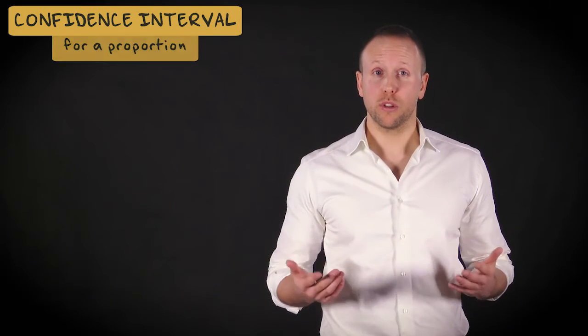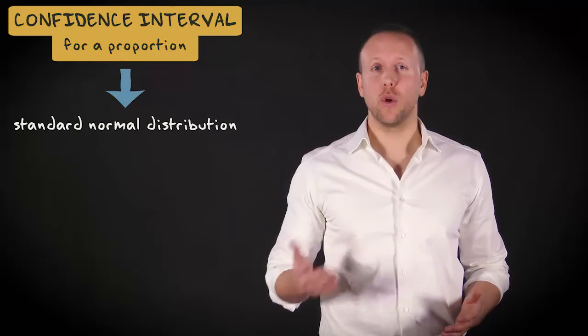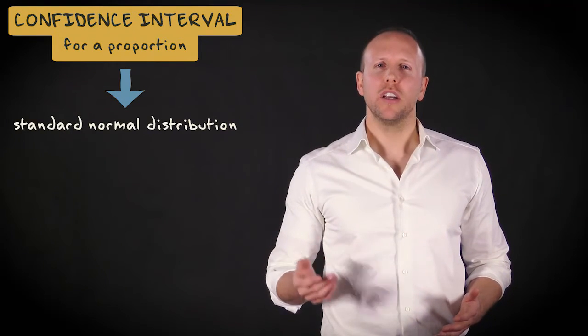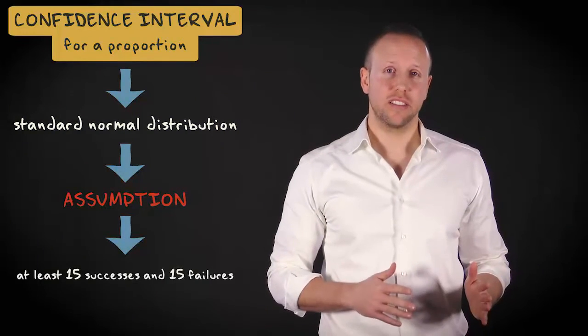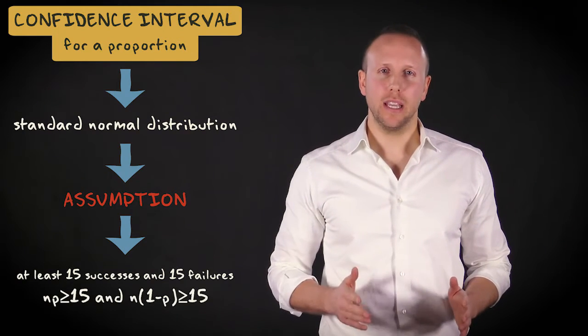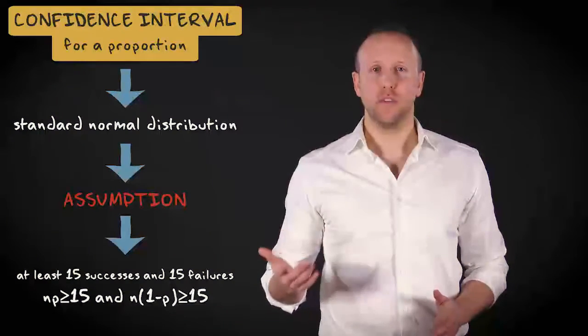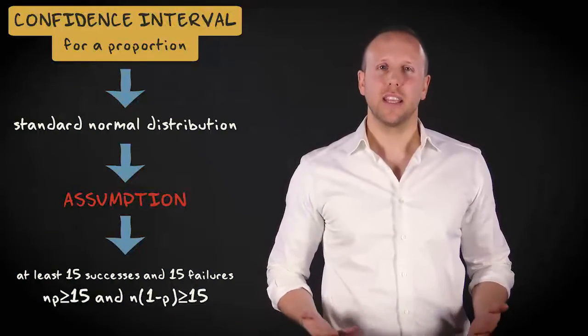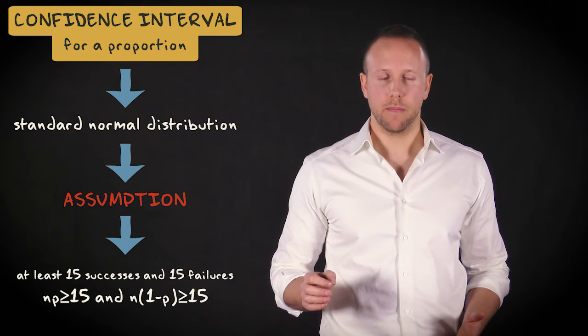In contrast with the confidence interval for a mean, when it comes to constructing a confidence interval for a proportion, we don't make use of the t-distribution and just stick with the standard normal distribution. However, your data need to satisfy one essential assumption. You should have at least 15 successes and 15 failures. In other words, n times p and n times 1 minus p need to be larger than or equal to 15.